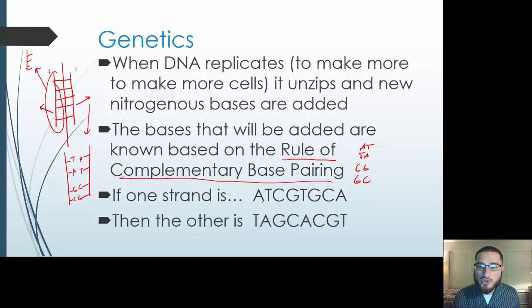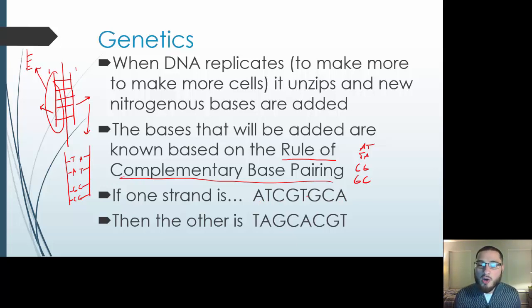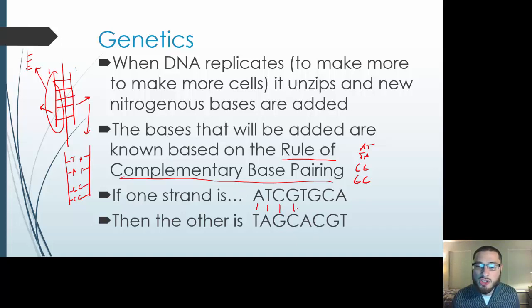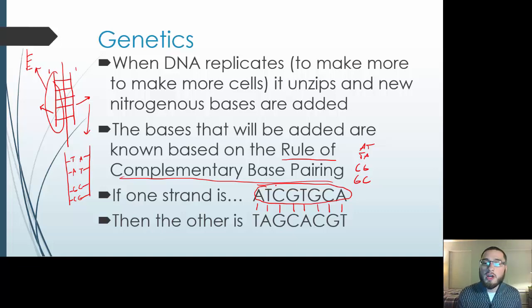For example, if I have a strand that is A, T, C, G, T, G, C, A — I know that the complementary strand pairs A with T, T with A, C with G, G with C, T with A, G with C, C with G, and A with T. So when I have one strand — any combination of those four nitrogenous bases — just by knowing that one strand I can know how to build and replicate my entire DNA.